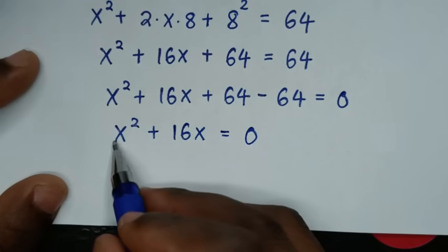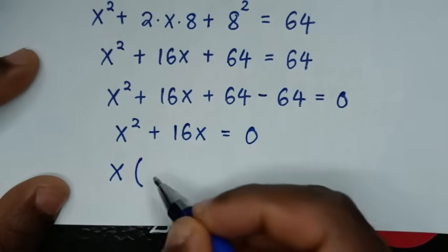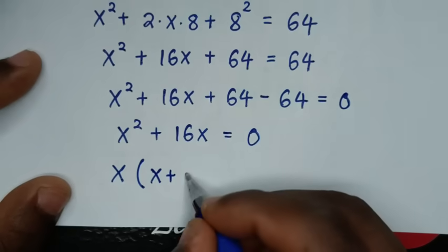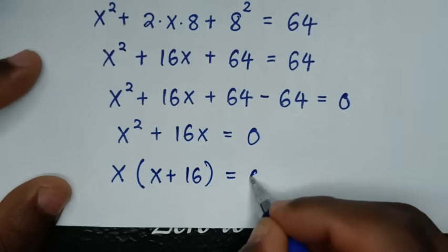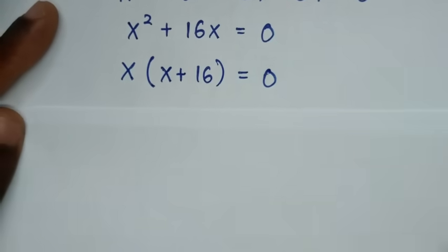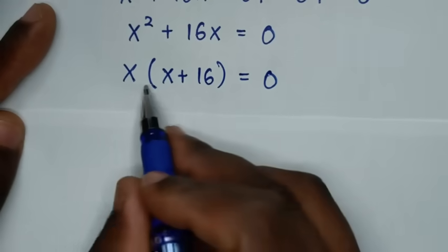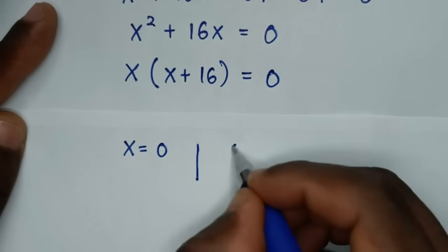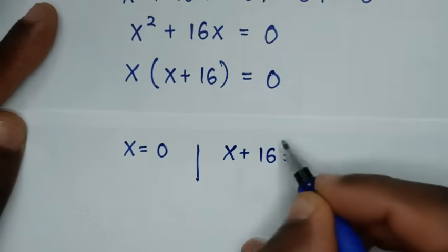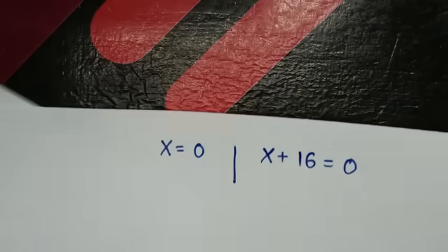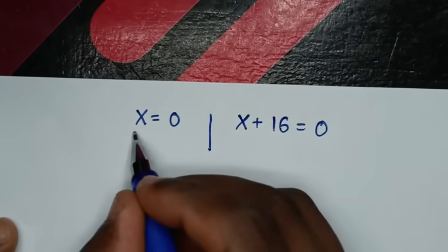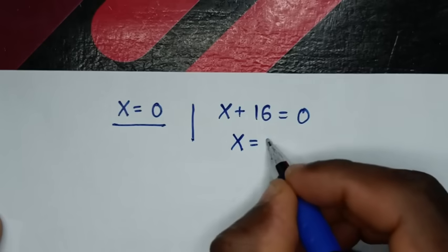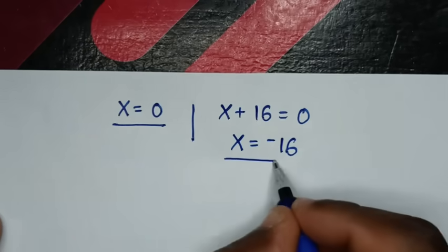From x² + 16x = 0, x is common, so we factor to get x(x + 16) = 0. From here we have two solutions: the first solution is x = 0, and the second solution is x + 16 = 0. Taking 16 to the right side gives x = −16. So this is the second solution.